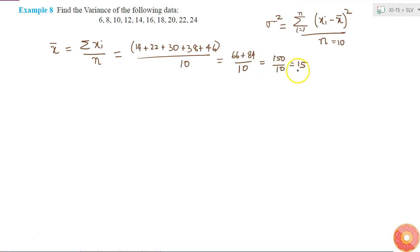So now I got my x̄ as 15. So my variance will be equal to summation over (xi minus x̄)² divided by 10.